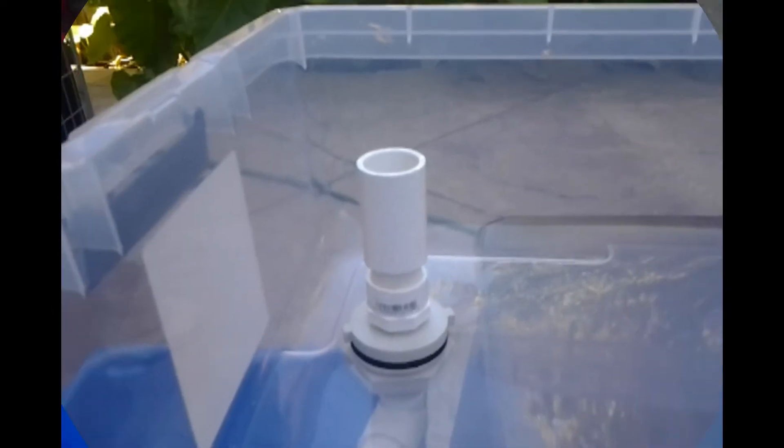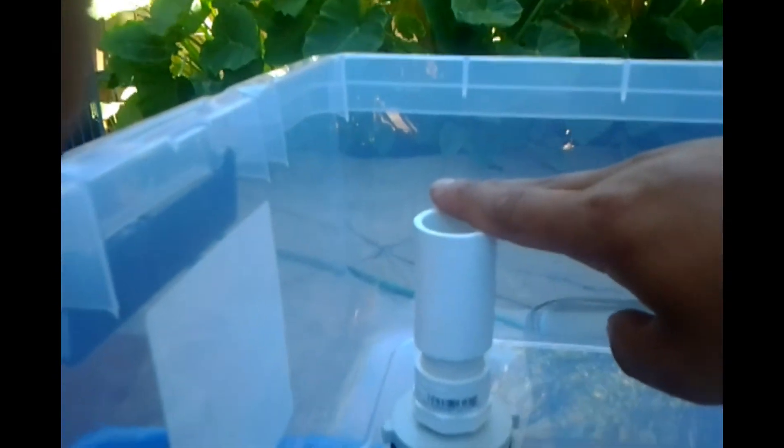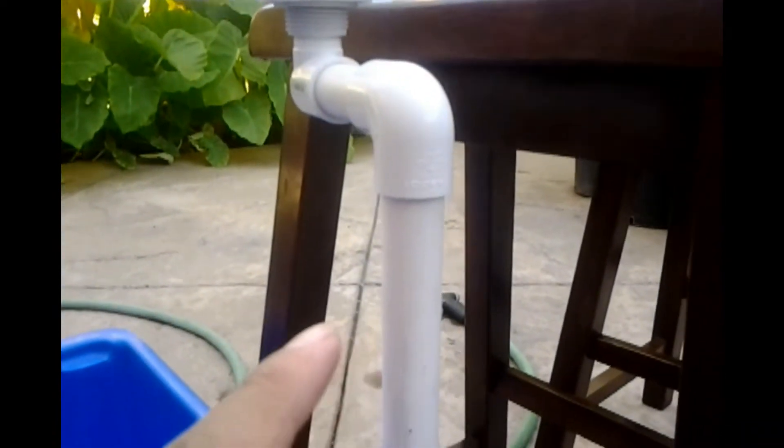So this is what it looks like when it's assembled. The standpipe is going to be sitting like an inch below the gravel height, so it can siphon the water out, and this is what it looks like in the bottom. And you can create whatever piping system that you want just to fit your needs.